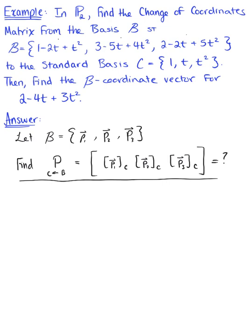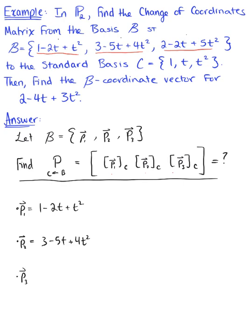To do this, we need to rewrite each of the given polynomial vectors. They're currently in linear combination form — vector equation form — and we want to rewrite them as matrix equations to identify the columns of the change of coordinates matrix. The first vector p sub 1 is 1 minus 2t plus t squared, the second is 3 minus 5t plus 4t squared, and p sub 3 is 2 minus 2t plus 5t squared.